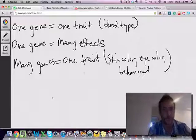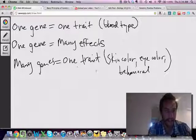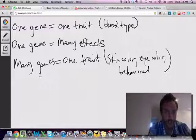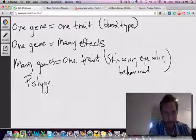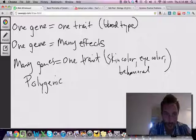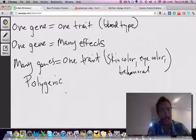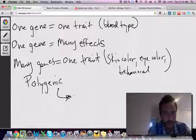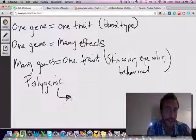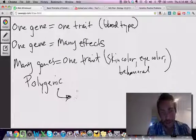What you'll notice about these traits - we call them polygenic, poly meaning many, genic meaning genes. What you'll notice is that these traits you can't fit in several discrete categories.